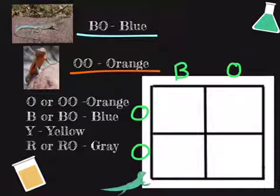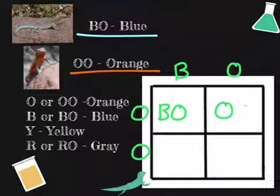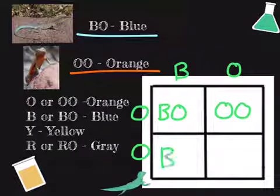Now we're going to cross them. So in the first box, it's going to be BO. In the second, it's going to be OO. In the bottom left, it's going to be BO. And the last one's going to be OO.